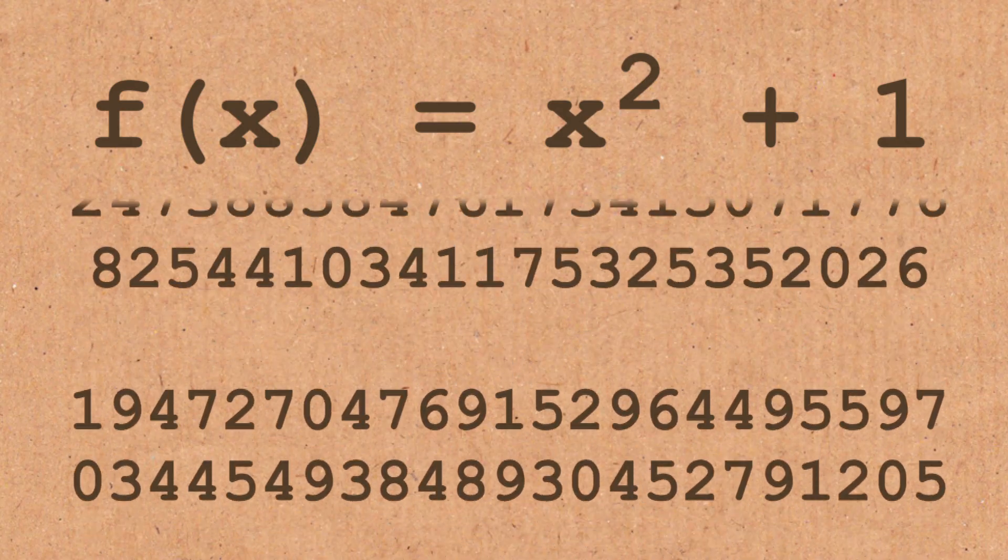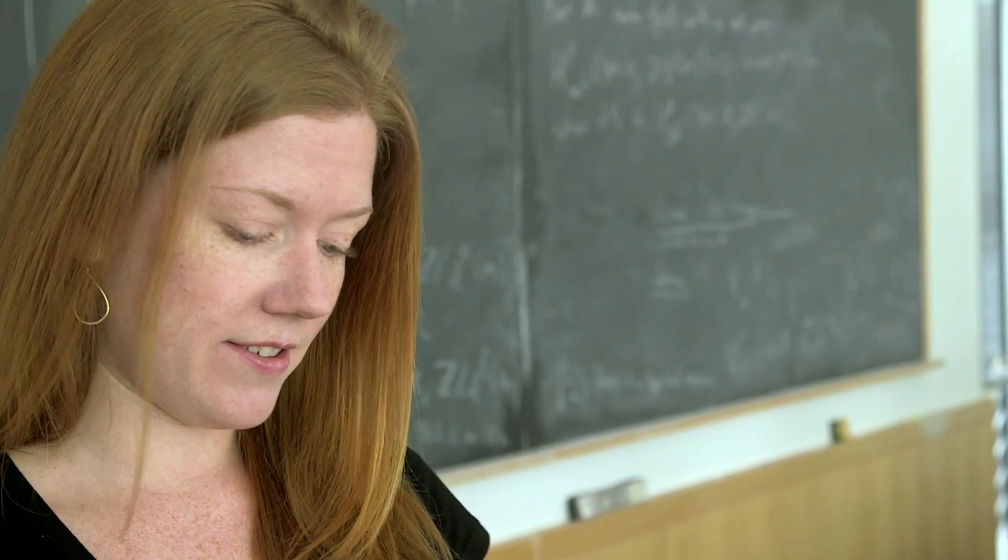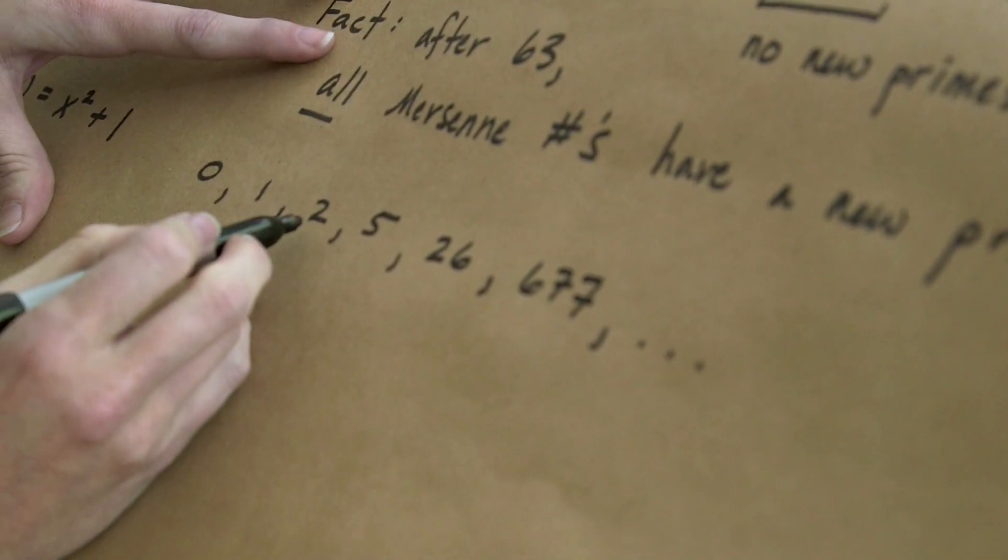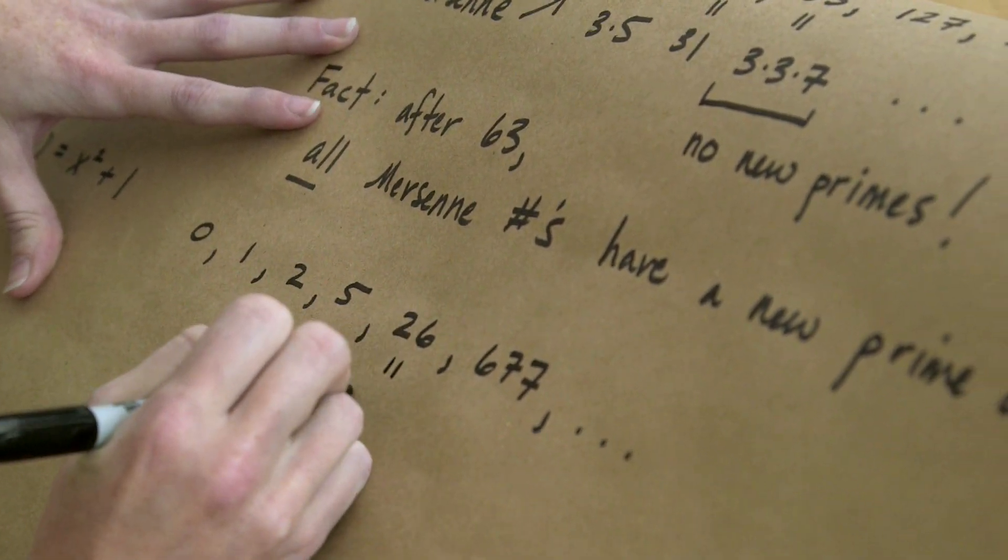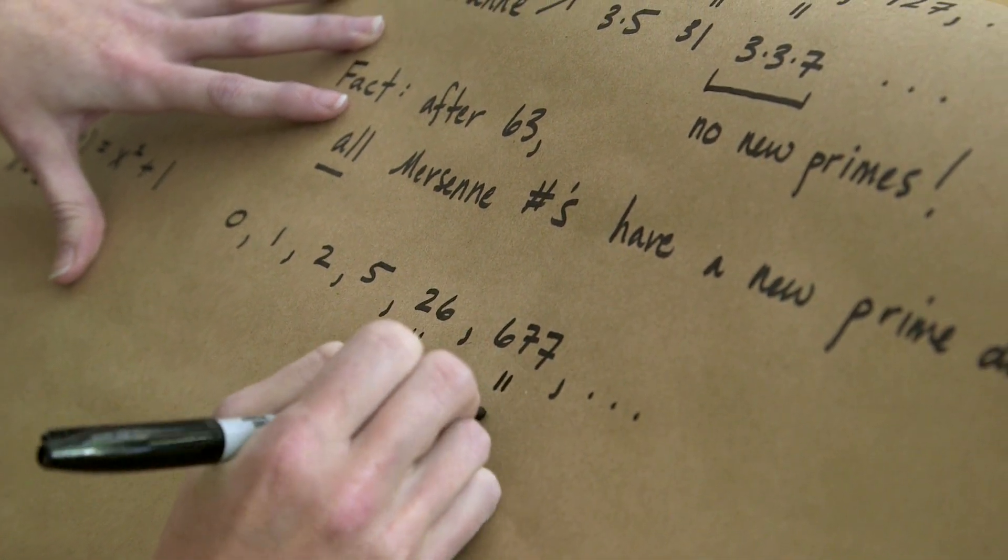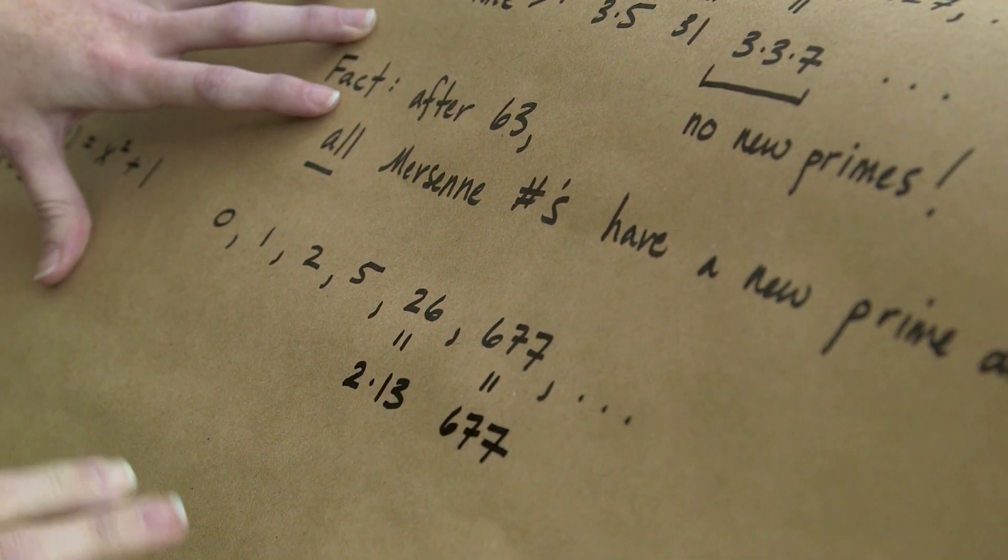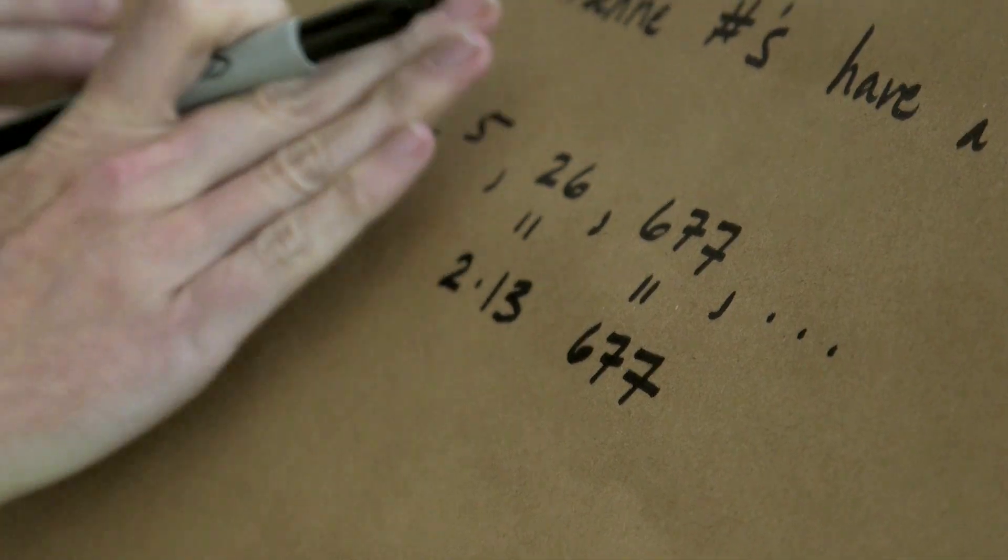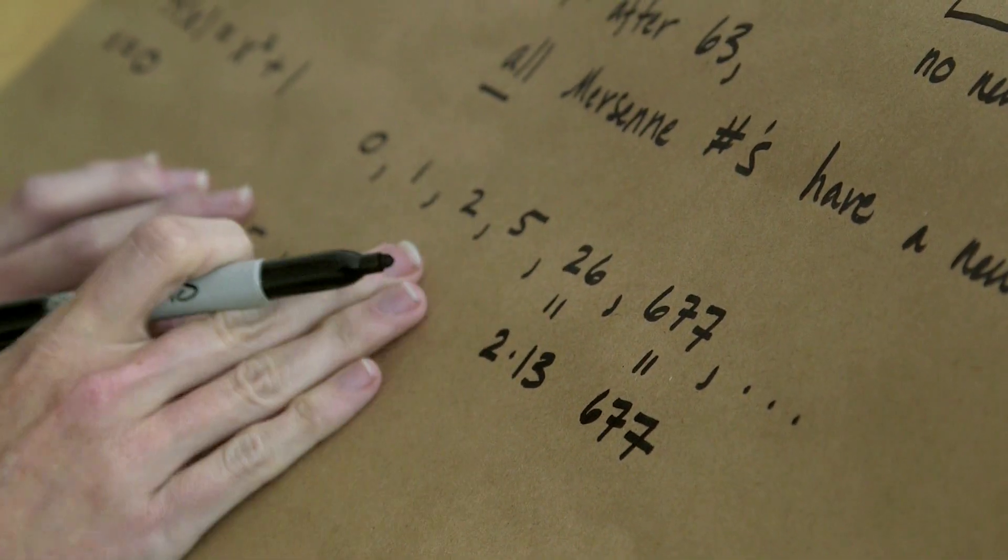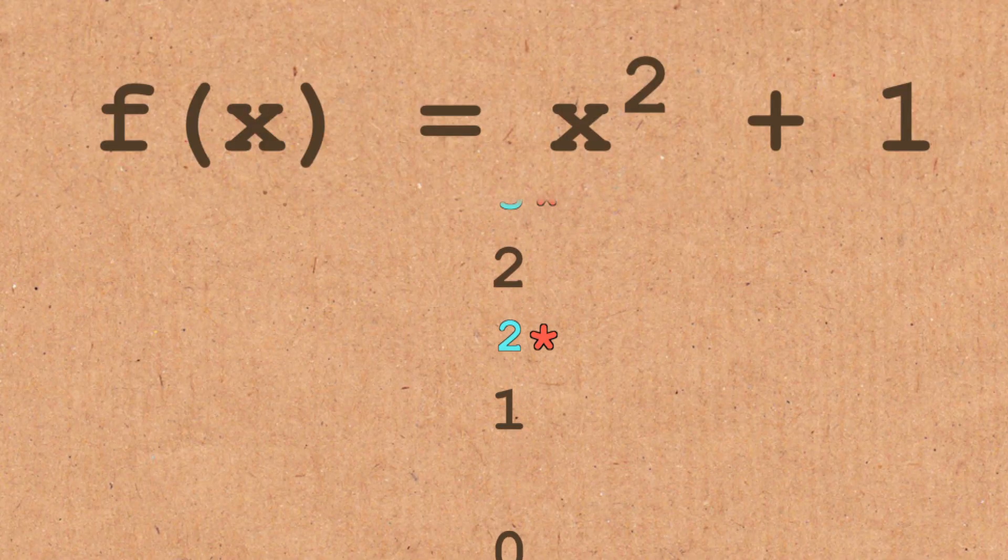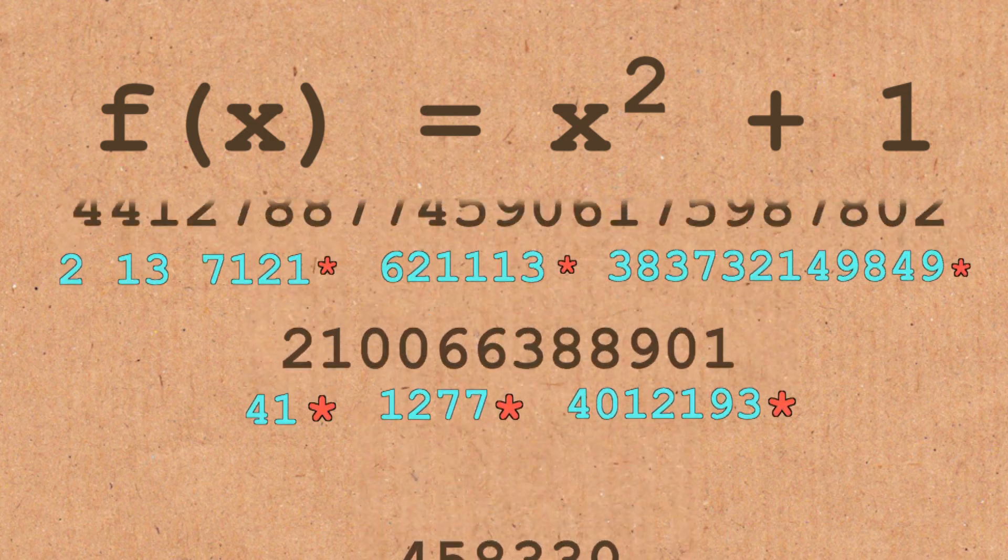Still we can ask, when do we start getting new prime divisors? So if we look at what we have here, so notice again, 2 and 5 are already prime. 26 is 2 times 13. And 677 is also prime. And it turns out that for this sequence, it's even better than Mersenne's sequence. All numbers after 2 have a new prime divisor. So this is proven that after 2, you always get a new prime divisor in this particular sequence.